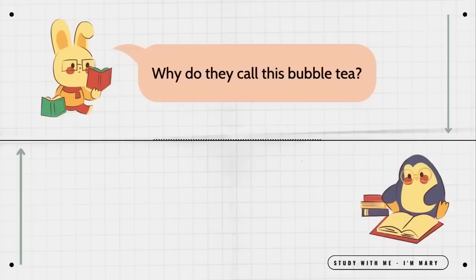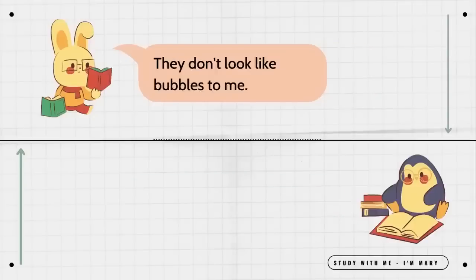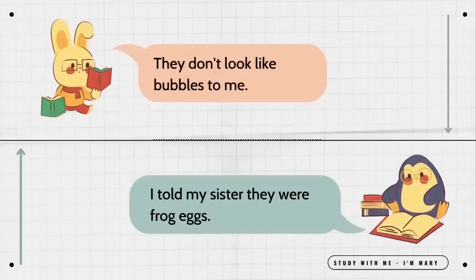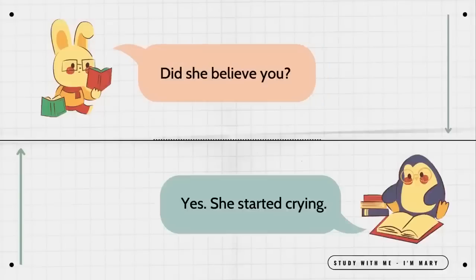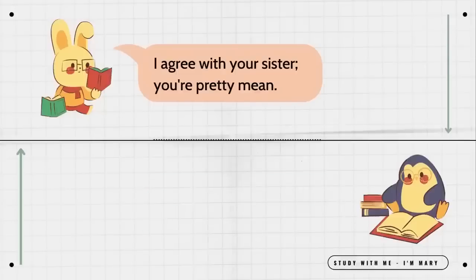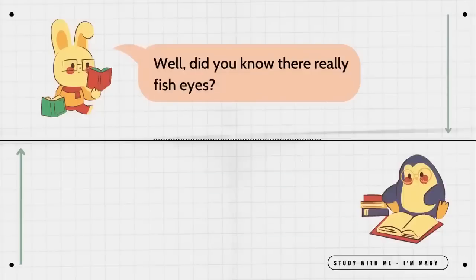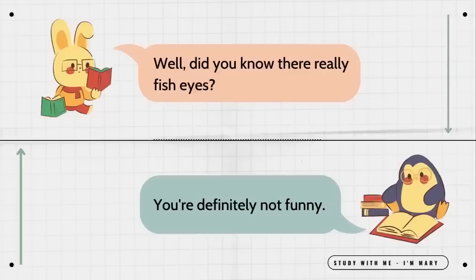Why do they call this bubble tea? I think it's because of the balls on the bottom. They don't look like bubbles to me. I told my sister they were frog eggs. Did she believe you? Yes, she started crying. Why was she crying? She said I was mean for eating baby frogs. I agree with your sister. You're pretty mean. It was just a bit of fun. Well, did you know they're really fish eyes? You're definitely not funny.